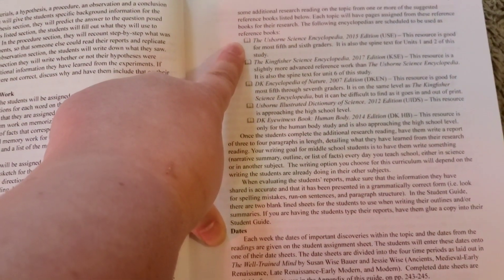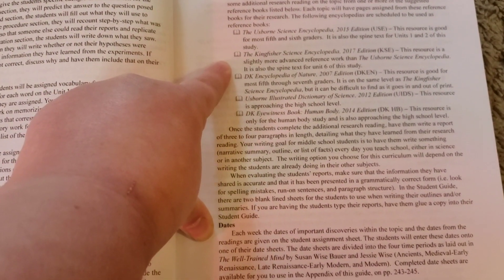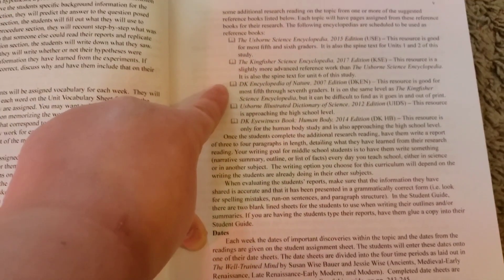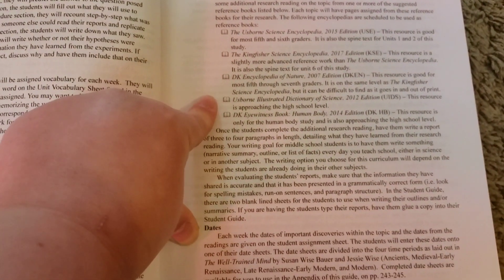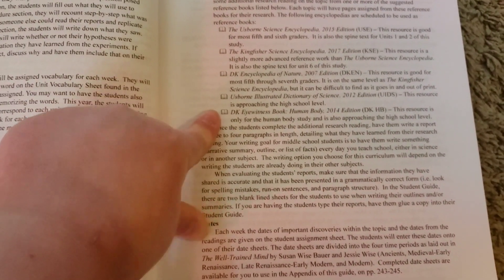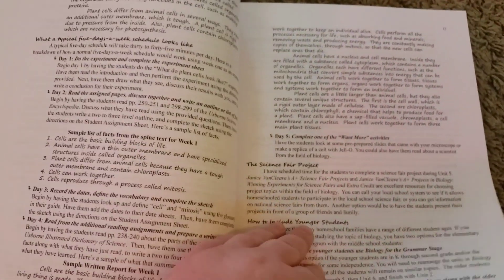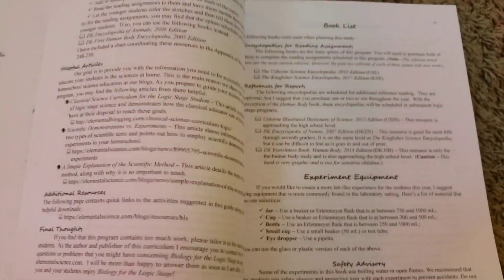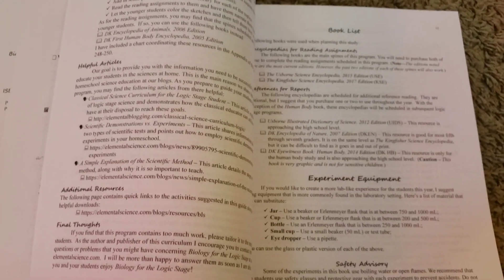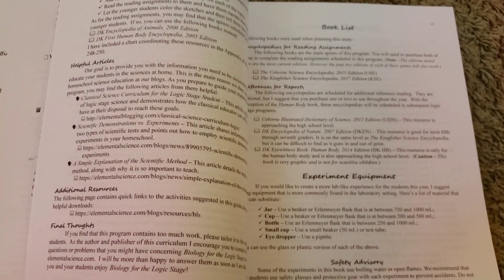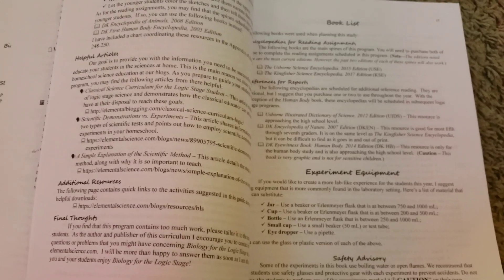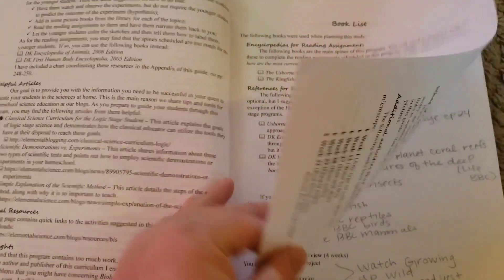There's the Usborne Science Encyclopedia, the Kingfisher Science Encyclopedia, and then these books here are optional to use with the program. I am actually waiting for the books in the mail, so I don't have those to show today, but I did just want to give you guys a peek into this, because I was looking on YouTube when I was looking into this, and there weren't very many reviews or videos about it, so I thought that I could give you guys an idea of what this program entails.